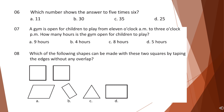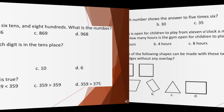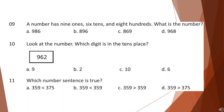Question 8: Which of the following shapes can be made with these two squares by taping the edges without any overlap? Question 9: A number has 9 ones, 6 tenths, and 8 hundredths. What is the number? Look at the options and choose your answer.